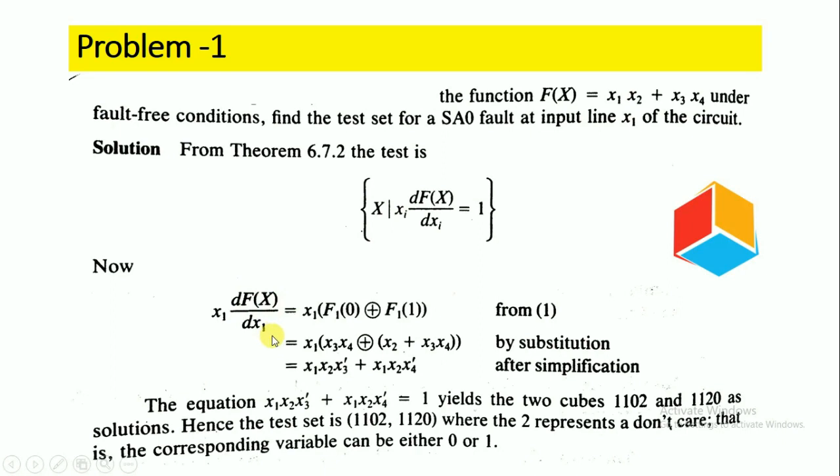So df(x)/dx1 equals x1(f1(0) ⊕ f1(1)), where ⊕ is the exclusive-or operation. This is the equation from the Boolean Difference Method.